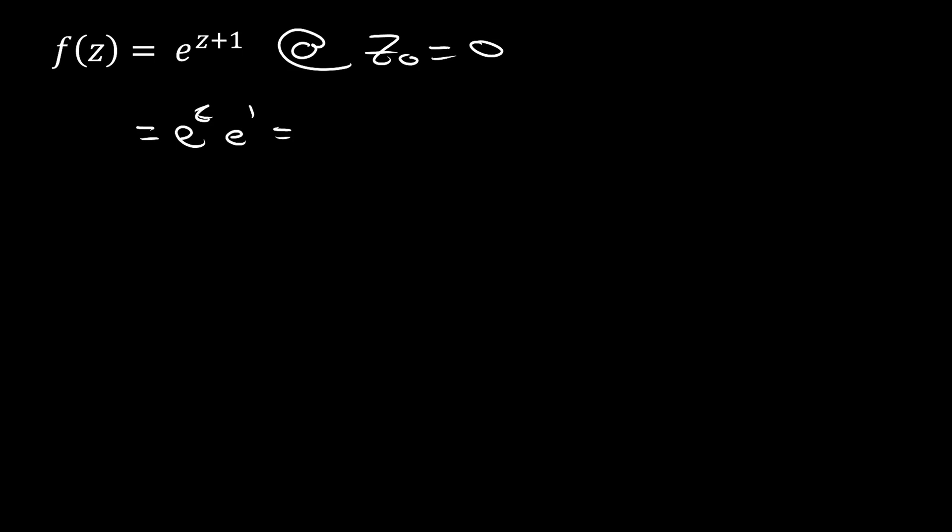In reality, we're going to get e times the sum from n = 0 to infinity of z^n / n!. If we expand this out and just get the first couple of terms, you're going to get e + ez + ez² / 2! and this is just going to continue. This is going to converge for |z| less than infinity. This is a pretty simple way to represent this complex function as a Taylor series.